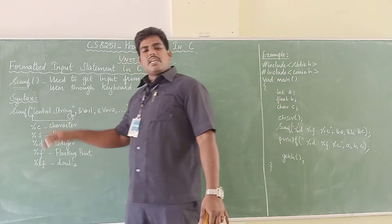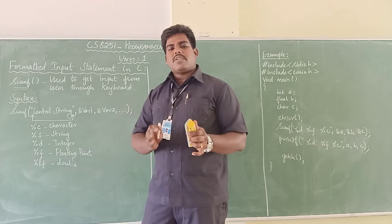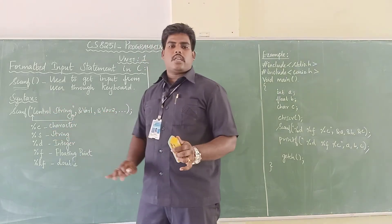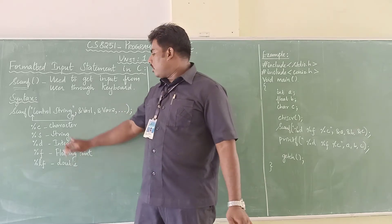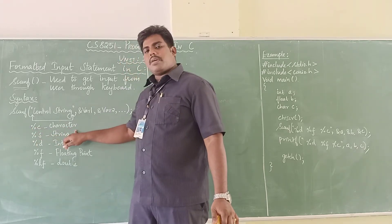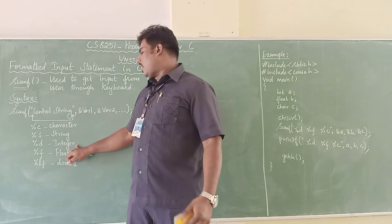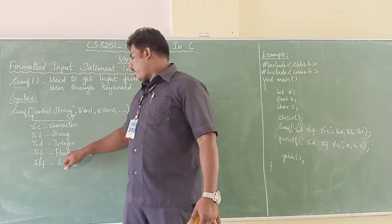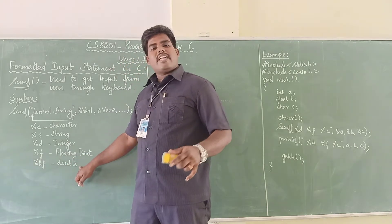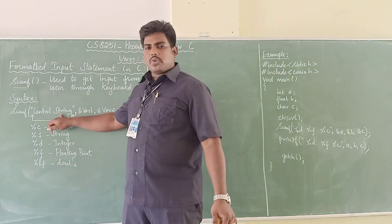So the control string is nothing but a format specifier. Control string is a format specifier used to specify which type of data it is. If it is a character, you have to specify with control string percentage c. If it is a string, specify with percentage s. If you want to get integer input, specify with percentage d. For floating point input, specify with percentage f. For a double variable, specify with percentage lf.